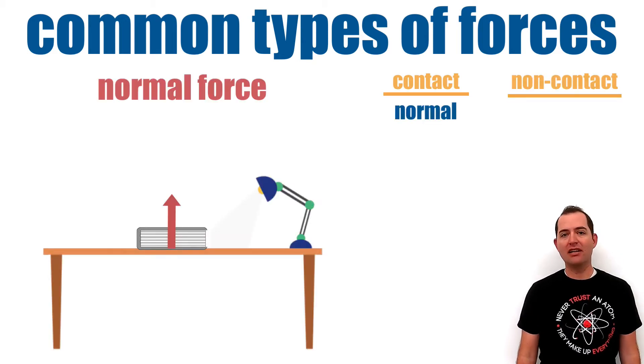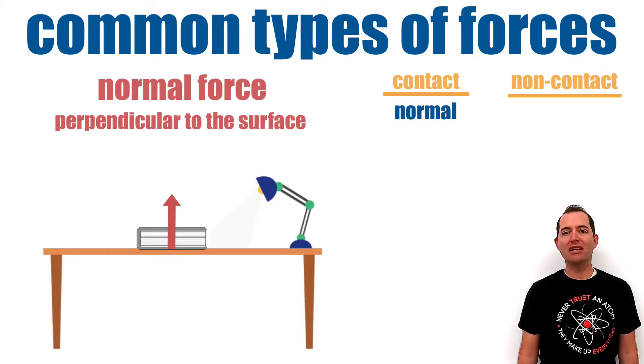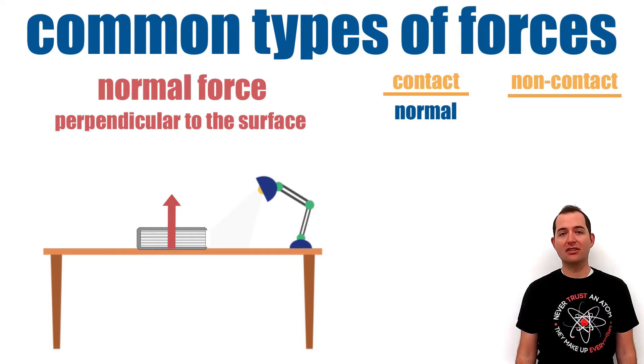The normal force is a contact force that acts perpendicular to the surface that an object contacts. It is the force that solid objects exert on each other to prevent them from passing through each other. For example, a book resting on a table is held in place by the normal force.